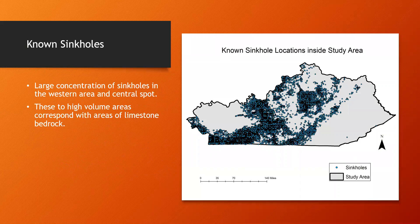This is a map of known sinkholes that have been mapped all across Kentucky. As you can see, there are two main large concentrations: one in the central area, which is actually where I live, and then a belt around the very far west area. These actually correspond with areas of limestone bedrock, as you'll see on the next slide.